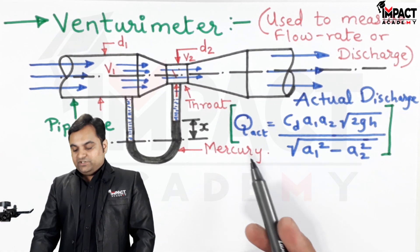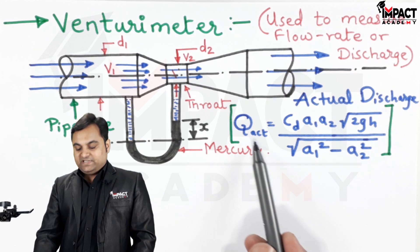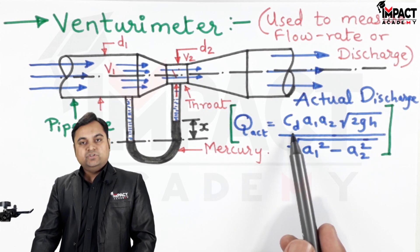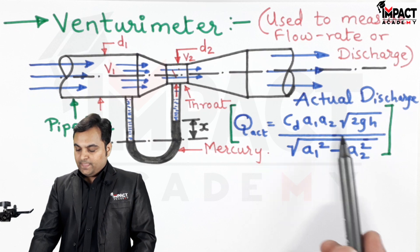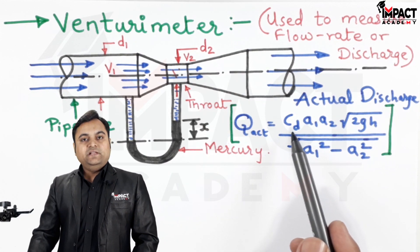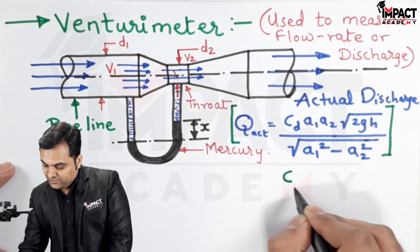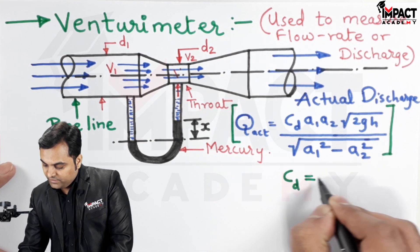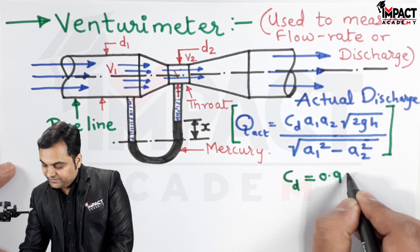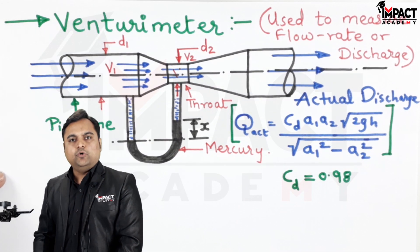Here is the formula by which the discharge is calculated. That is called as actual discharge: Cd, which is coefficient of discharge for this venturimeter. This value would be less than 1, and for venturimeter the Cd value is equal to 0.98 or it can even be 0.99.